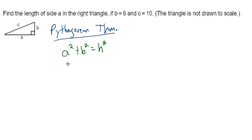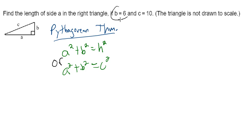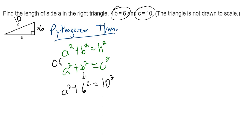So you can think of it as A squared plus B squared equals H squared, or A squared plus B squared equals C squared, which is the way they have it set up in this particular problem. We know B is equal to 6 and C is equal to 10, so we want to find A. We're going to plug in 6 for B and 10 for C, and we get A squared plus 6 squared, which is 36, equals 10 squared, which is 100.